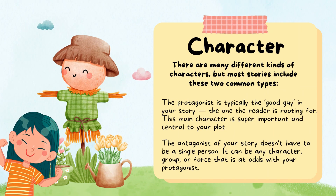Character: There are many different kinds of characters, but most stories include these two common types. The protagonist is typically the good guy in your story, the one the reader is rooting for. This main character is super important and central to your plot. The antagonist of your story doesn't have to be a single person — it can be any character, group, or force that is at odds with your protagonist.